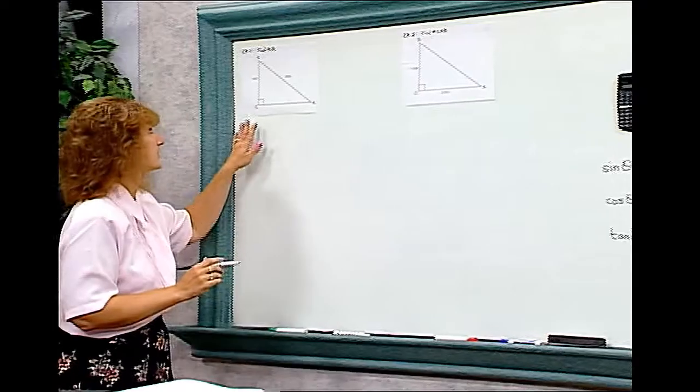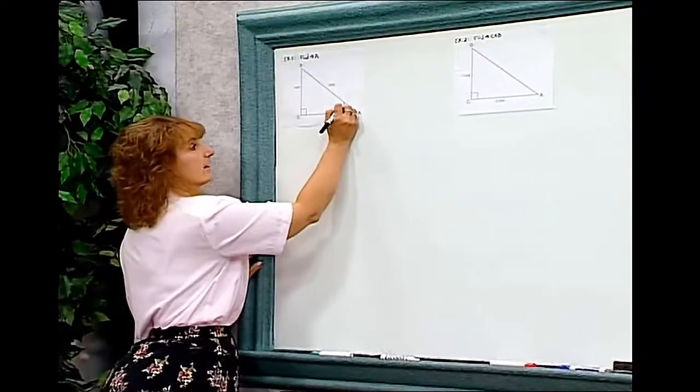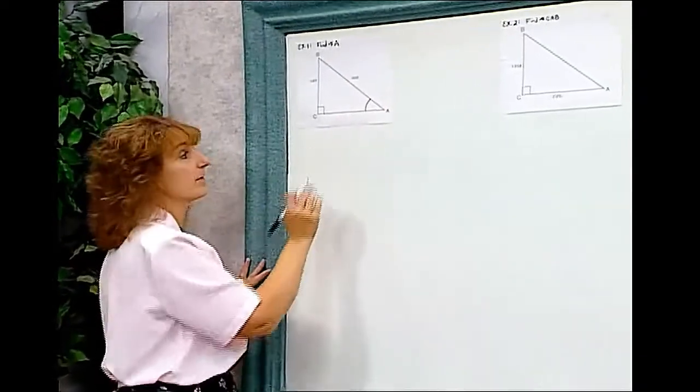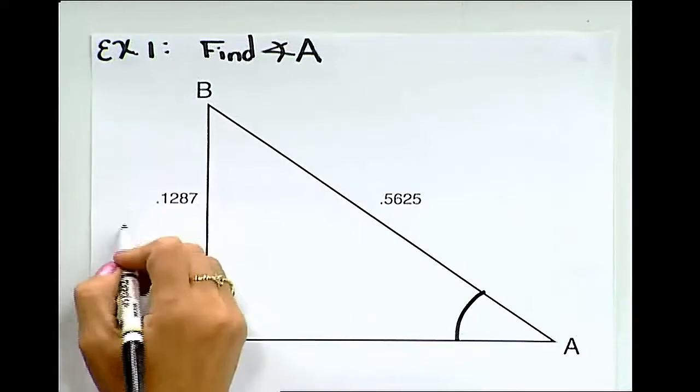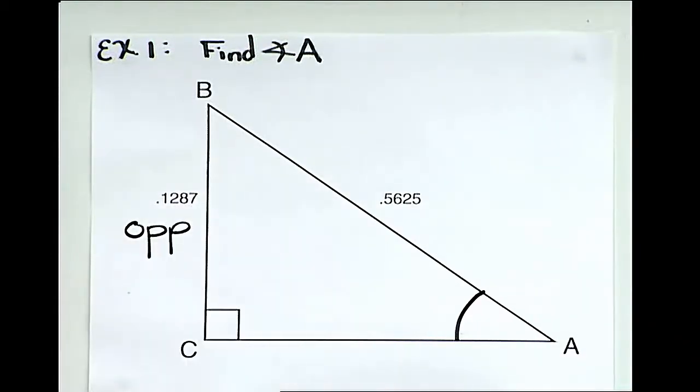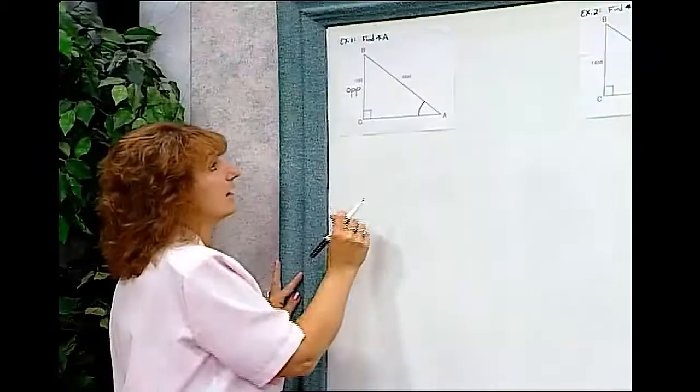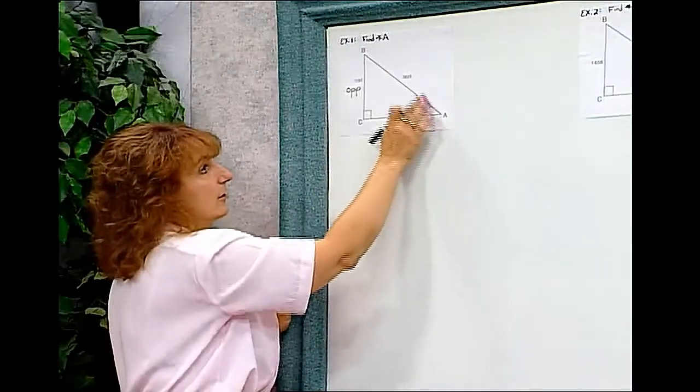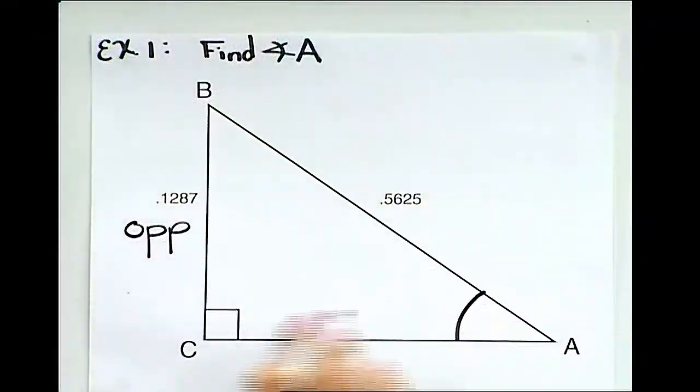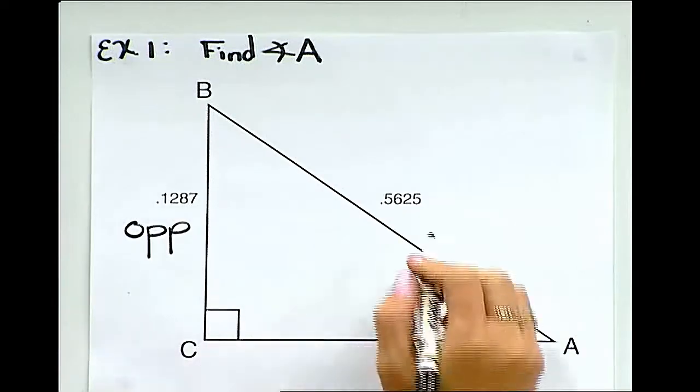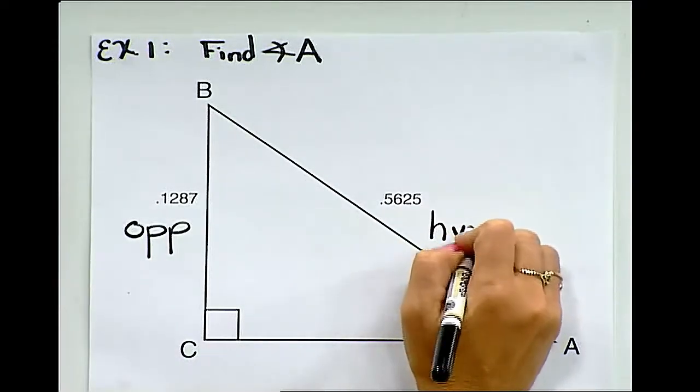When I'm looking at this picture, I need to find angle A, which is here. This side is opposite angle A, so I'm going to label that as the opposite side. This side here is the longest side across from the right angle. That's our hypotenuse.